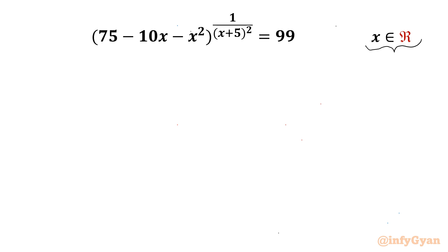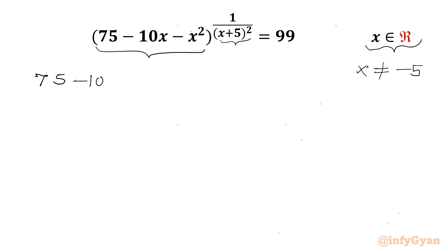Let's get started by noting that x plus 5 cannot be 0, so x cannot be negative 5. Now I will consider this quadratic first separately: 75 minus 10x minus x². I can write 75 minus 10x by splitting it as minus 15x plus 5x.